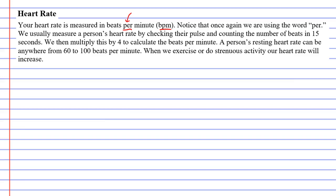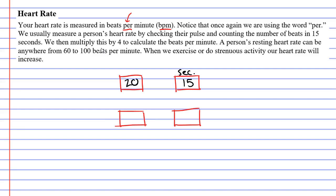Now, when we measure a person's heart rate, we do it by checking their pulse and counting the number of beats in 15 seconds. I'm going to use our four boxes technique to figure out a person's heart rate. So let's say we check their pulse for 15 seconds, and in 15 seconds we counted 20 beats from their pulse.